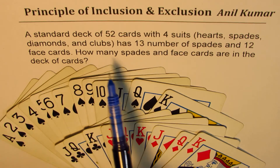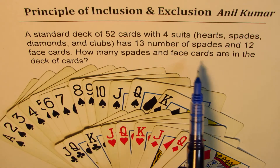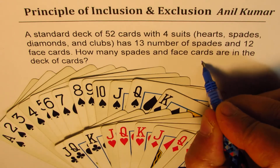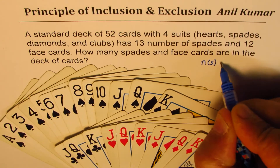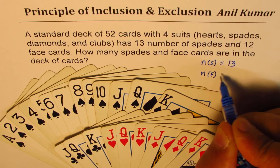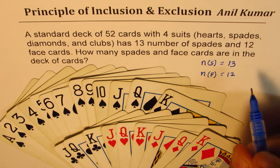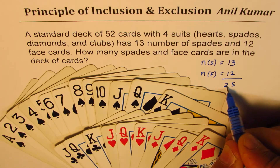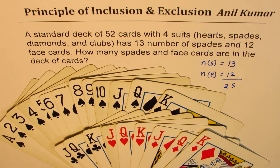Now the question is: how many spades or face cards are in the deck of cards? We have that the number of spade cards is 13 and the number of face cards is 12. Now if you add them, what do you get? You get 25. But are these 25 unique cards? Not at all — they are 3 fewer than 25.